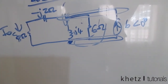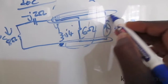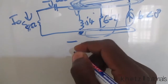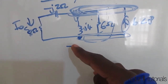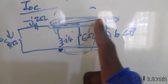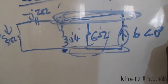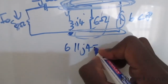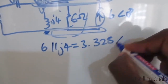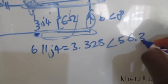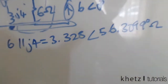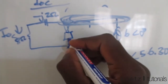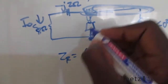Now that this circuit looks familiar, we can go ahead and find IOC. We'll do KCL node analysis at the top node. We can combine the two parallel elements: 6 in parallel with j4 gives 3.328 with an angle of 56.3099 degrees in ohms. This is the parallel combination, let's call it ZR.